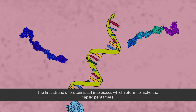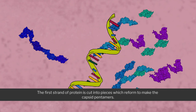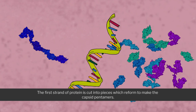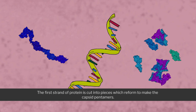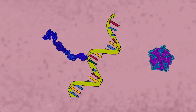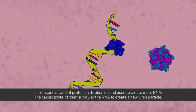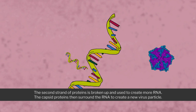The first strand of protein is cut into pieces, which reform to make the capsid pentamers. The second strand of proteins is broken up and used to create more RNA.